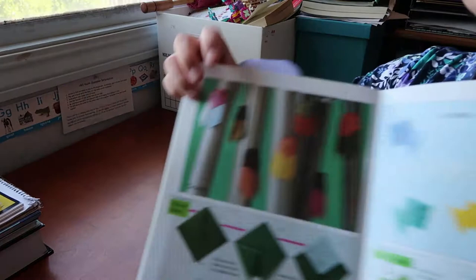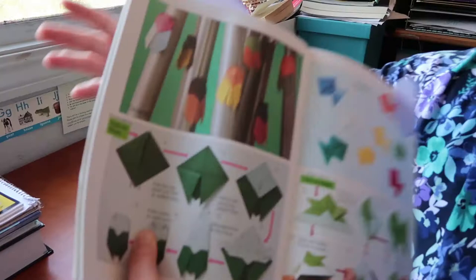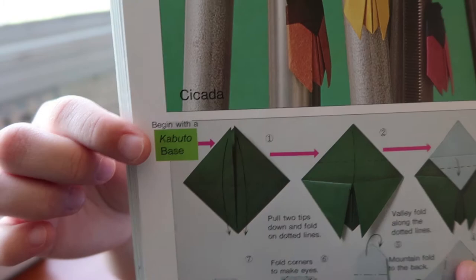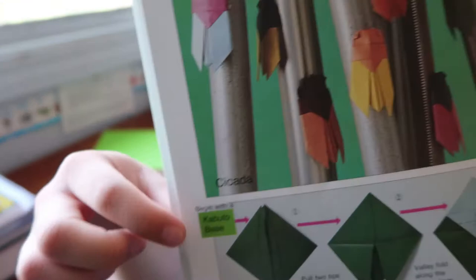Okay, so I decided I'm going to make the cicada pattern. This is what they look like. So for the cicada we need to start with, let's see what is it called, kabuto. We need to start with the kabuto base.